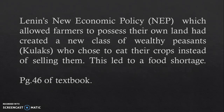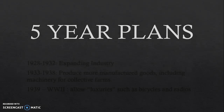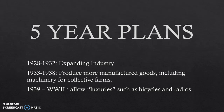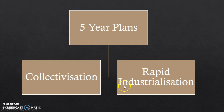Stalin wanted to carry out modernisation of the Soviet Union — that was his end goal. He did this through a series of five-year plans: the first expanding industry, the second producing more manufactured goods including machinery for collective farms, and the third allowing for luxuries such as bicycles and radios during World War II. These five-year plans can be broadly categorised into two main policies: collectivisation and rapid industrialisation. Both helped him achieve his bigger goal of modernisation.